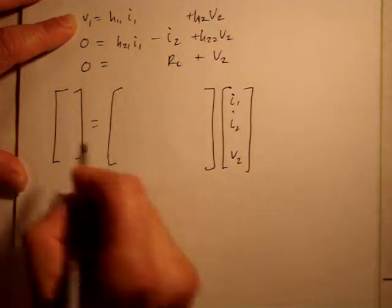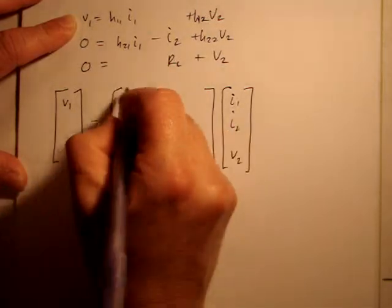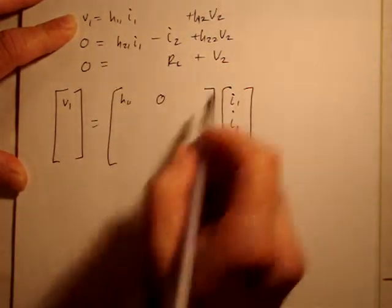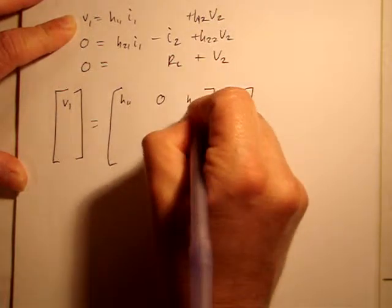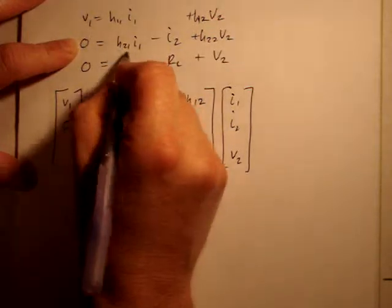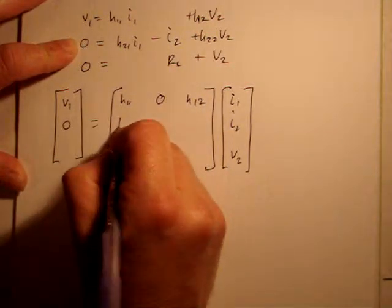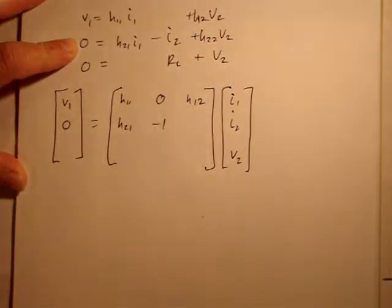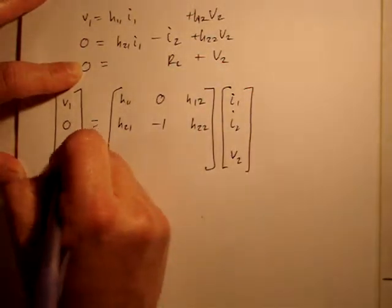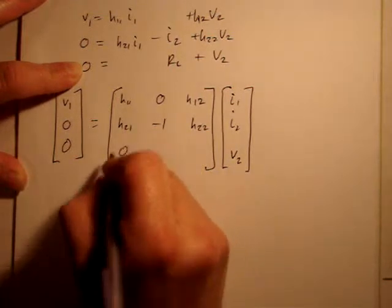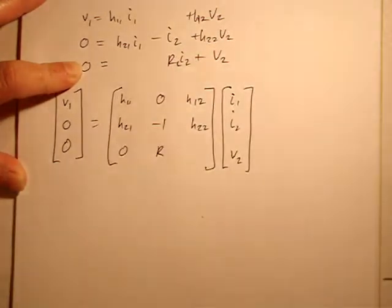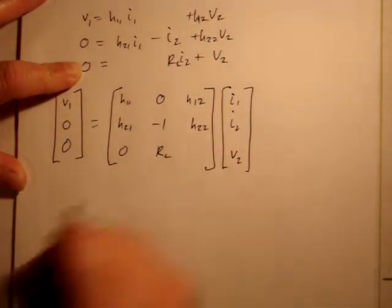Looking at our first equation, V1 equals, coefficient of I1 is H11, coefficient of I2 is 0, coefficient of V2 is H12. Similarly, second equation, 0 equals, coefficient of I1 is H21, I2 has a coefficient of negative 1, V2 has an H22. Third equation, 0 is, I1 is 0 there, RL coefficient of I2, and a 1 coefficient for V2.